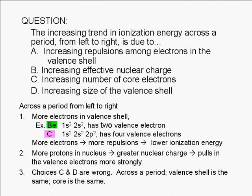Choices C and D are wrong. Across a period, the valence shell is the same and the core is the same. In the example given above, beryllium and carbon both have the same core electrons: two electrons in the 1s orbital.